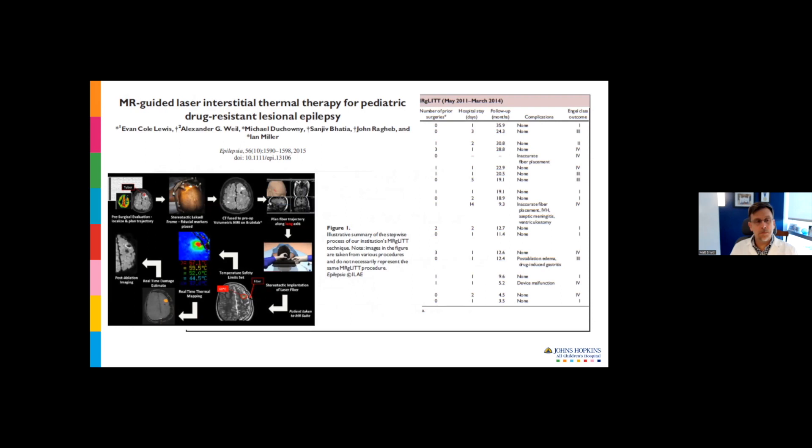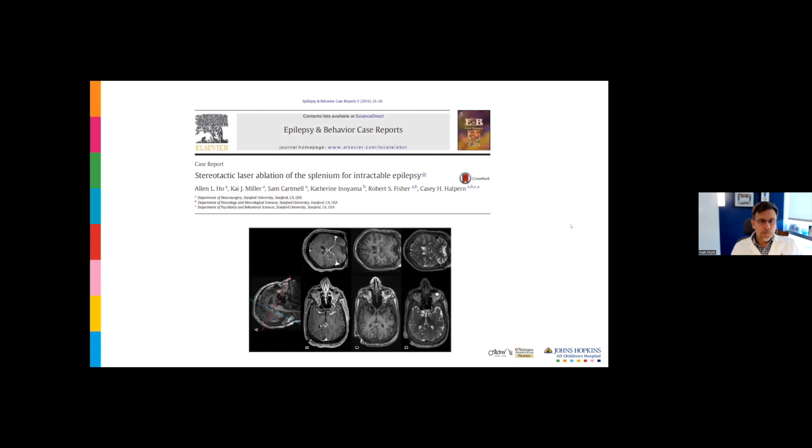This talk is focusing on pediatric series. In our literature, this was the first large series of laser ablation in children for epilepsy from the group in Miami, Florida. They presented data on about 15 patients who underwent laser ablation, usually for focal seizure onsets. They didn't do any callosotomies in this paper, but this was a proof of principle. This was the first case report utilizing laser ablation for corpus callosotomy. The group in Stanford did a completion posterior callosotomy with a single fiber using Visualase around 2015.